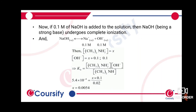Now we write the Kb expression: Kb = (x × 0.1) / 0.02. Substituting the value of Kb = 5.4×10⁻⁴ and solving for x, we get x = 0.0054 × 0.02 / 0.1. The value of x comes out to be 1.08×10⁻³.